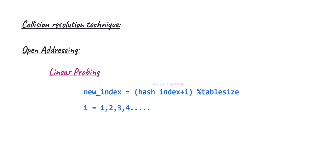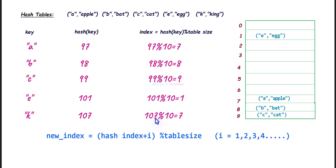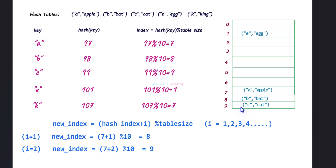In linear probing, when a collision happens at index i, we move sequentially to the next index. If that slot is occupied, we check the next one, and so on until an empty slot is found. In this example, the collision occurred at index 7. Linear probing checks the next slot — if it's not empty, it checks the next one, continuing until an empty slot is found, then stores the value there.